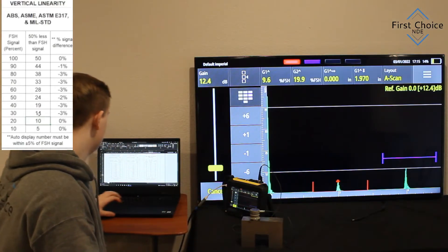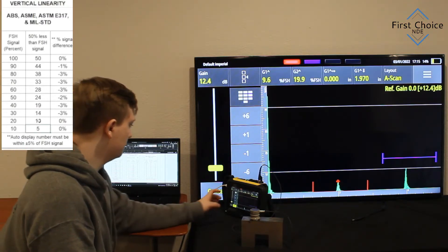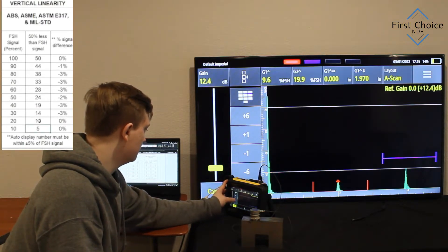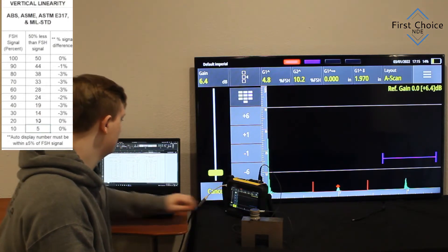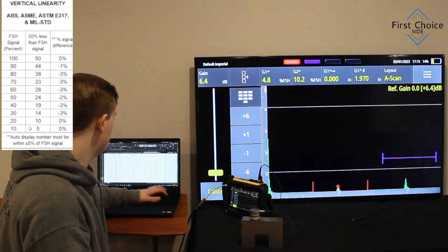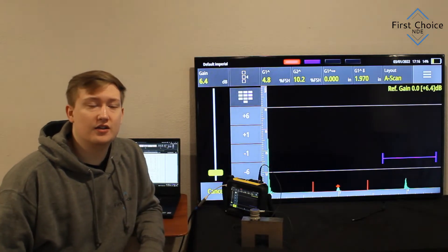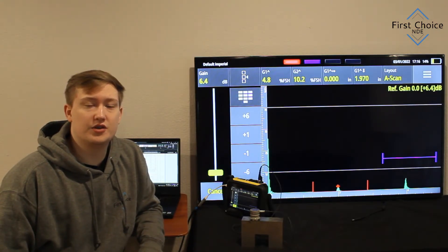Here's the 20% on the right, and we have 9.6 roundup to 10, so 0%. So that's perfect. Then you would go again, so we have 10 on the right, 4.8 roundup to 5. Alright, and as you can see, that concludes the vertical linearity, and it is within calibration.